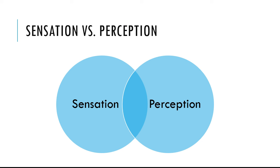We first want to differentiate sensation versus perception. What do you think sensation is? The physical experience of a stimulus — just detecting a stimulus. If you sense it, you have detected a stimulus using a specific receptor for a specific stimulus.